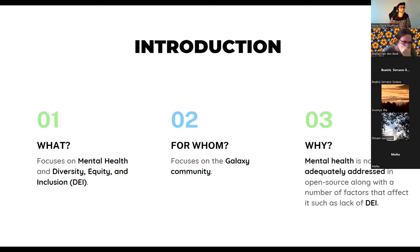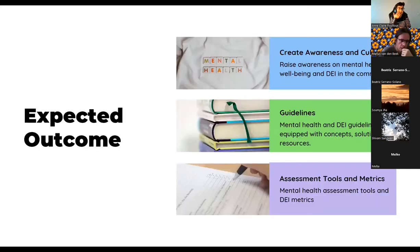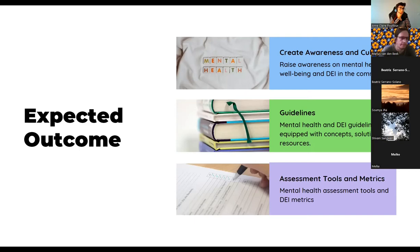The reason we wanted to do this is that mental health is not really adequately addressed, along with the factors that contribute to mental health problems — that could be lack of DEI, which means diversity, equity and inclusion. Generally, we have three expected outcomes. One of them is creating awareness through writing blogs. The second outcome is providing guidelines on mental health and DEI for the community. And the third outcome is providing assessment tools for mental health and metrics for DEI.